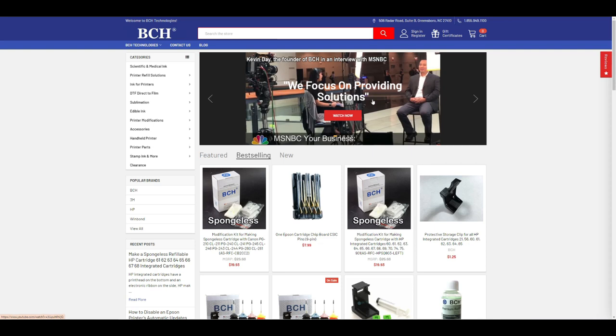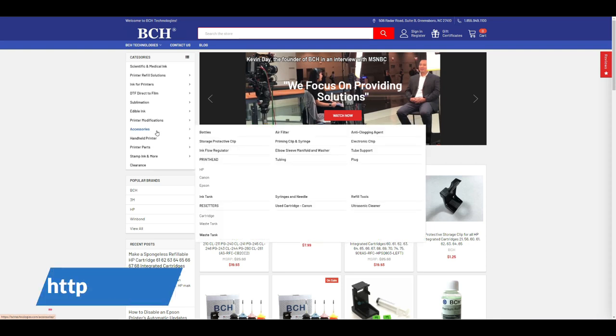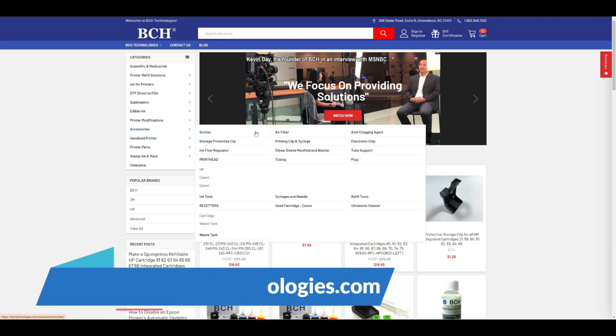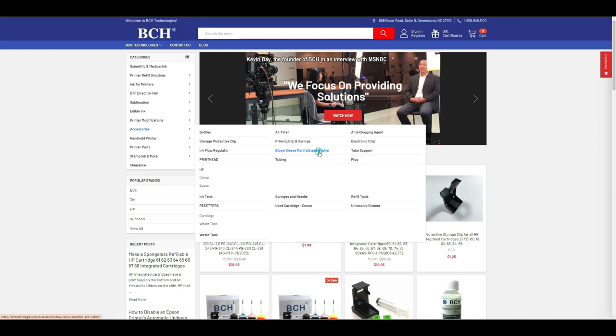I'm going to put a product link in the description, but here's where you'll find it. Go to bchtechnologies.com, go to accessories, and go to elbow sleeves, manifold, and washer.